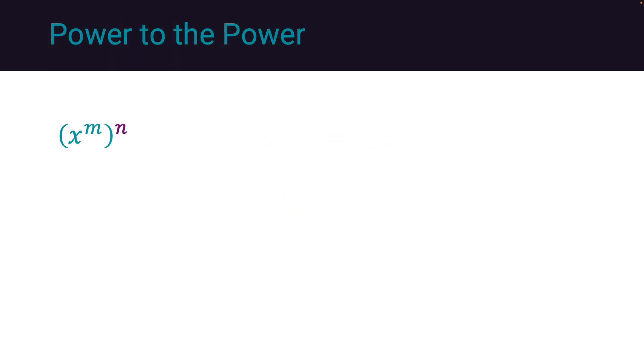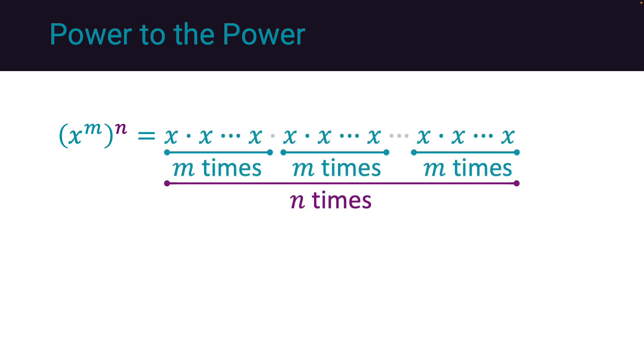For power to the power, where we have x to the m to the n, we can separate x multiplied by itself m times, and these are multiplied n times. As a result, we obtain x to the m times n.